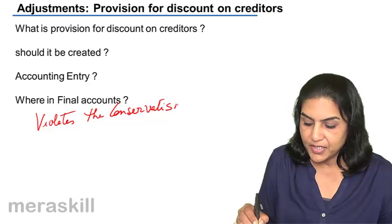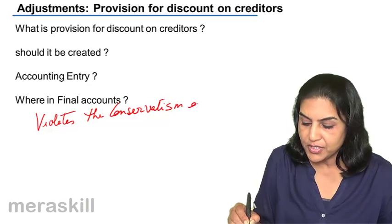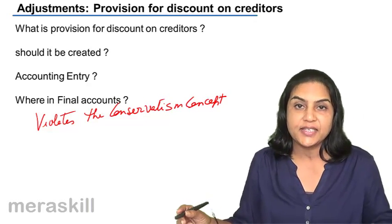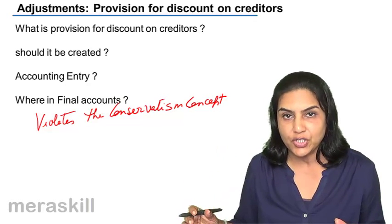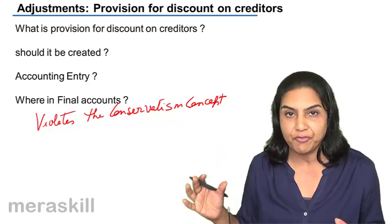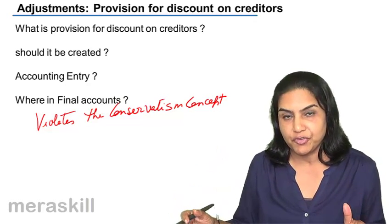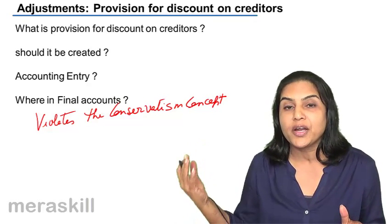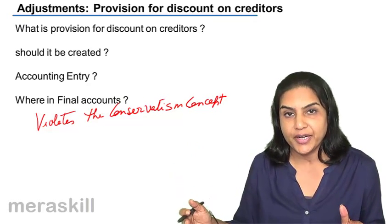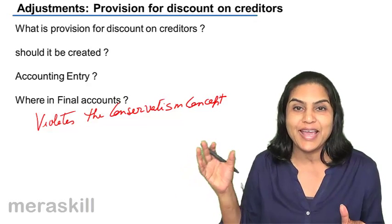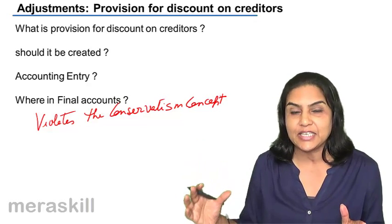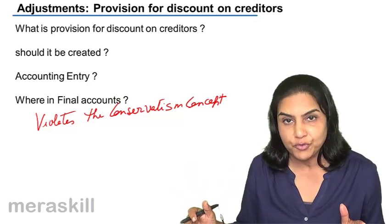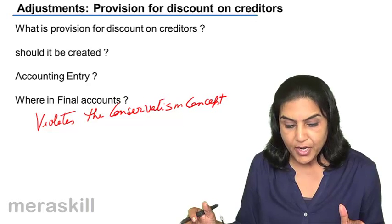What does the conservatism concept, or the concept of prudence, say? It says that if we anticipate losses, we provide for them. Like we made a provision for doubtful debts, like we made a provision for discount on debtors — for discount allowed — because we expect that these expenses or losses may arise in a future period.